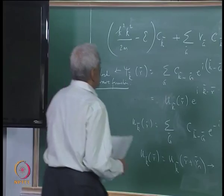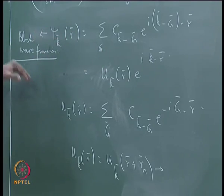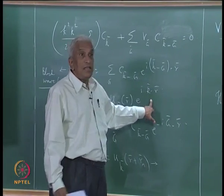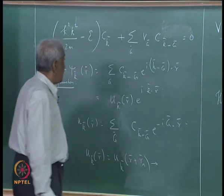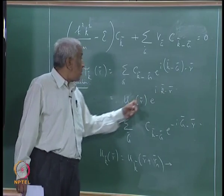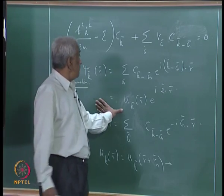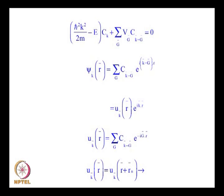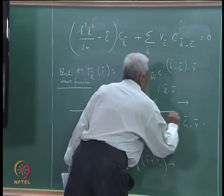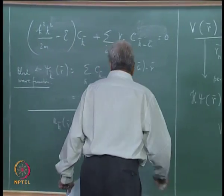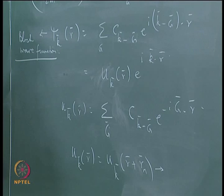The consequence of the translational invariance of the periodic crystalline lattice is that the wave function ψk(r) is no longer the free-electron plane wave e^{ik·r}, but rather e^{ik·r} modulated by uk(r), which is also translationally invariant. This is the form of the Bloch wave function, which we use in our description of the energy eigenvalues of an electron moving in a perfectly periodic potential. This is one important result we will use in our discussion of the formation of energy bands in solids.